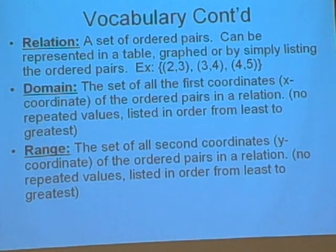Vocabulary continued. Domain: domain is a set of all the first coordinates, all the x-coordinates, no repeated values listed in order from least to greatest. Range is a set of all the second coordinates, all the y-values of the ordered pairs. No repeated values listed in order from least to greatest.